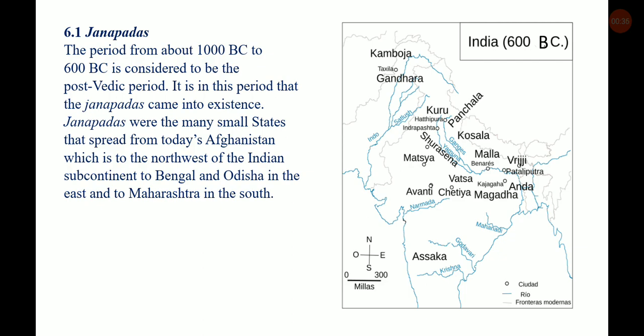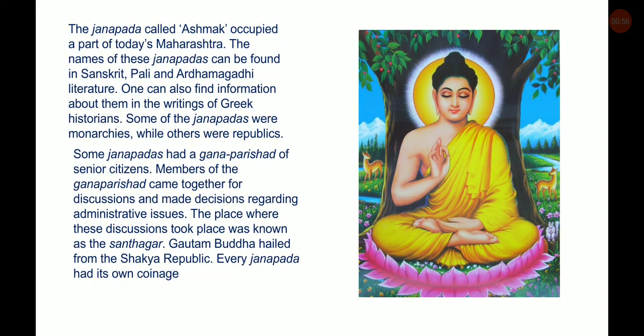Janapadas were the many small states that spread from today's Afghanistan, which is to the north-west of the Indian subcontinent, to Bengal and Odisha in the east and to Maharashtra in the south. The Janapada called Ashmak occupied a part of today's Maharashtra. The names of these Janapadas can be found in Sanskrit, Pali and Ardhamagadhi literature.